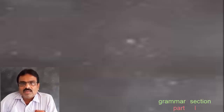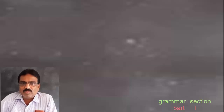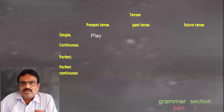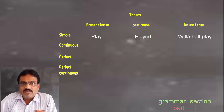So now it is clear. In simple tenses, taking the verb 'play' as an example: 'play' is simple present, 'played' is past, and 'will/shall play' is the future. Simple tense is covered. Now to understand continuous or progressive tense, we use the BE form as a helping verb. The various BE forms are: am, is, are, was, were.